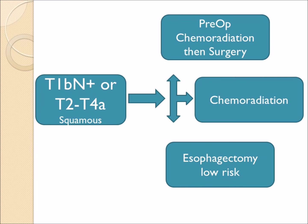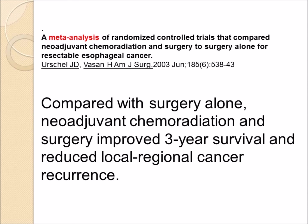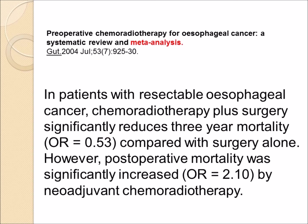On the other hand, if the tumor is more advanced — deeper into the wall of the esophagus or involving lymph nodes — then preoperative chemoradiation followed by surgery is considered the standard approach. Meta-analyses of multiple published studies show that overall three-year survival is better with neoadjuvant or preoperative chemoradiation before surgery, though one review found higher surgical complications or operative mortality when surgery was preceded by chemotherapy and radiation.